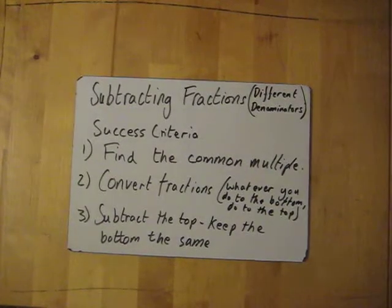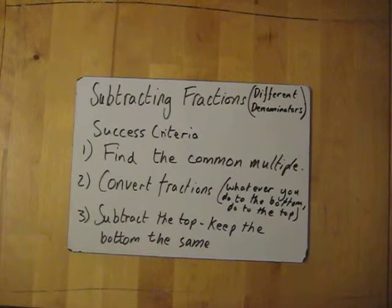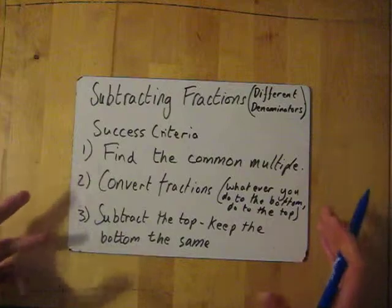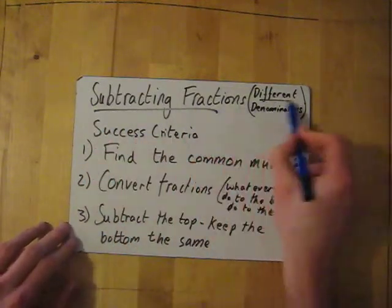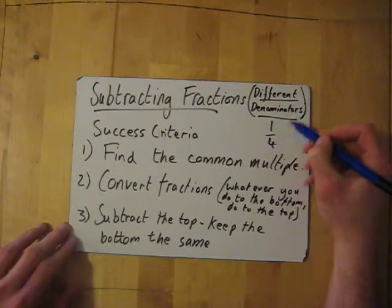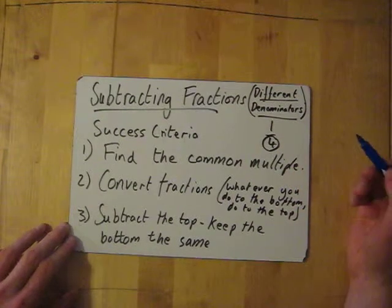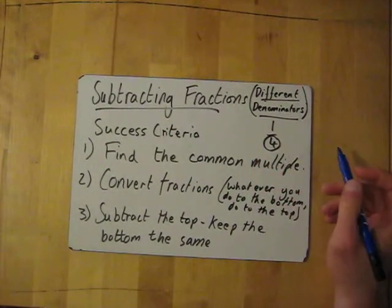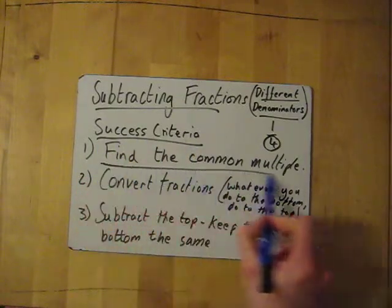Right now we're going to look at subtracting fractions with different denominators. It's very similar to adding fractions with different denominators — same process, but the final thing you do is subtract instead of add. The denominator is the bottom part of a fraction — it's the one that dominates, sort of what makes it what it is.